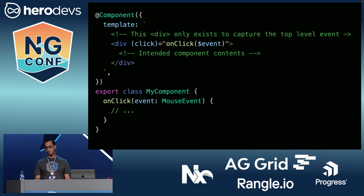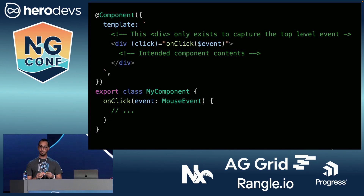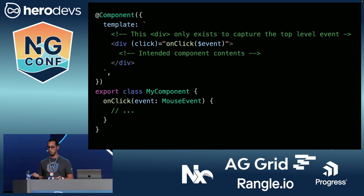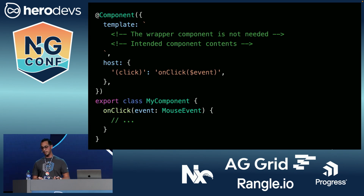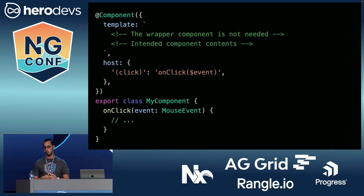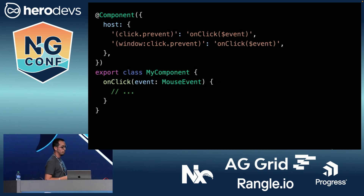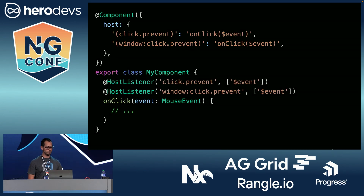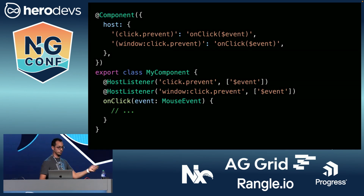As for event bindings, we have a similar situation as with classes and styles. If we have a card component and we need a click anywhere on it to trigger an event, we normally wrap it in another useless div just so we can trigger that event. Same thing applies here — any syntax you can use on the template you can use in the host property. This will bind the event to the host and you don't need another div. This supports event manager plugins and global modifiers like window and document. And just for completeness, this is also something you were able to do with the HostListener decorator, but decorators are clunky, so don't use them.